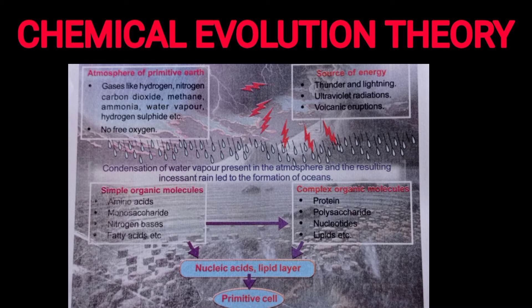The primitive atmosphere contained gases like hydrogen, nitrogen, carbon dioxide, methane, ammonia, water vapor, and hydrogen sulfide. There was no free oxygen. Water vapor condensed. The sources of energy included thunder and lightning, ultraviolet radiations, and volcanic eruptions, along with continuous rain, leading to the formation of the primitive ocean.